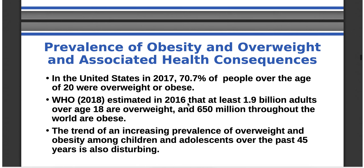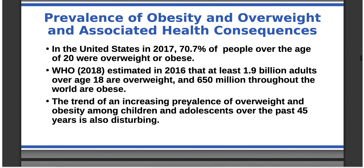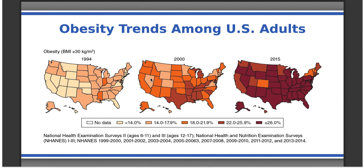Part of the reason we discuss obesity and overweight is the prevalence. In the United States, almost three-quarters of the population are considered overweight or obese. Globally, it's estimated that around 1.9 billion adults in 2016 were overweight or obese — roughly 25% of the world's population. Obesity trends maps for the US show just obesity, not counting overweight, and the trend from 1994 to 2000 to 2015 shows a dramatic change.